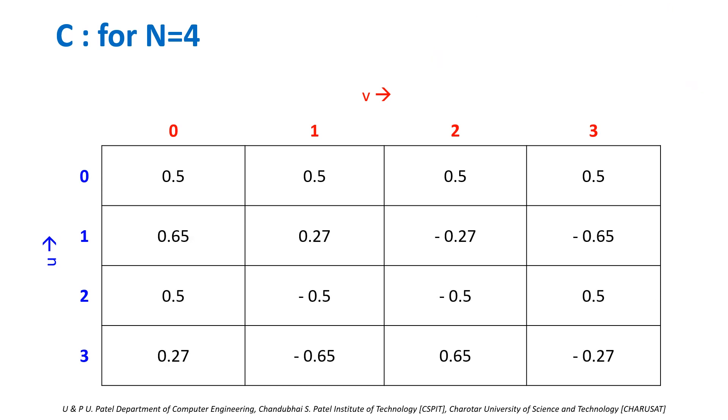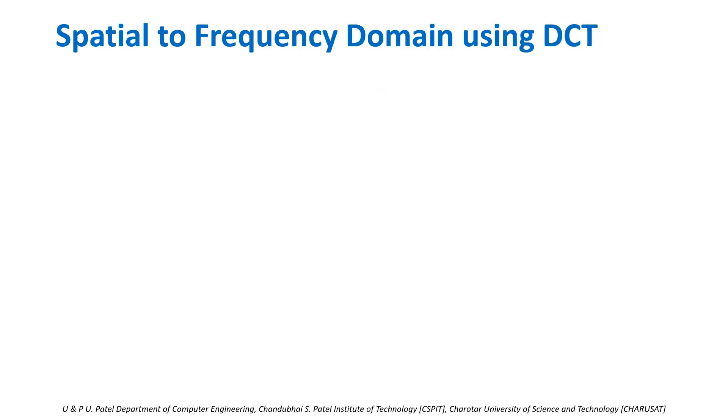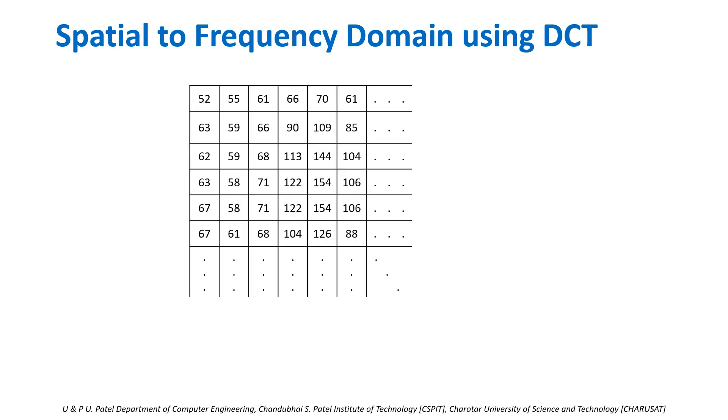And this is our C for N=4. Let us convert spatial domain image to frequency domain using DCT. This is my input image f. This is 2D function, so to convert into frequency domain, we will follow the equation: F = C × f × C^T. We are going to use C of 4×4 size, so we need small f also 4×4 size. Select 4×4 size subimage from your input image.